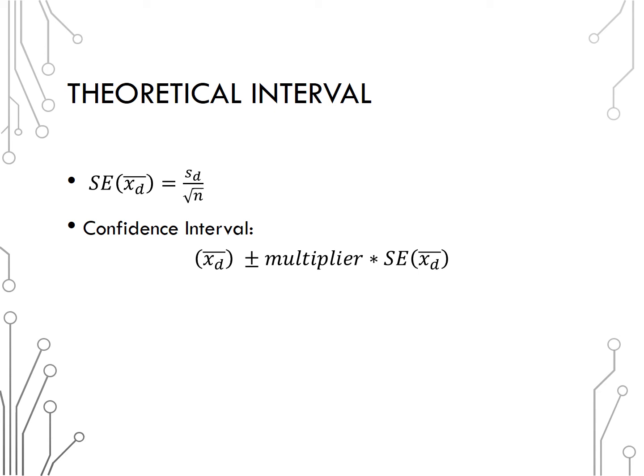Again, be sure when interpreting the confidence interval to include the order of subtraction either by explicitly including it in the interpretation, or stating that one observation is higher than the other on average.